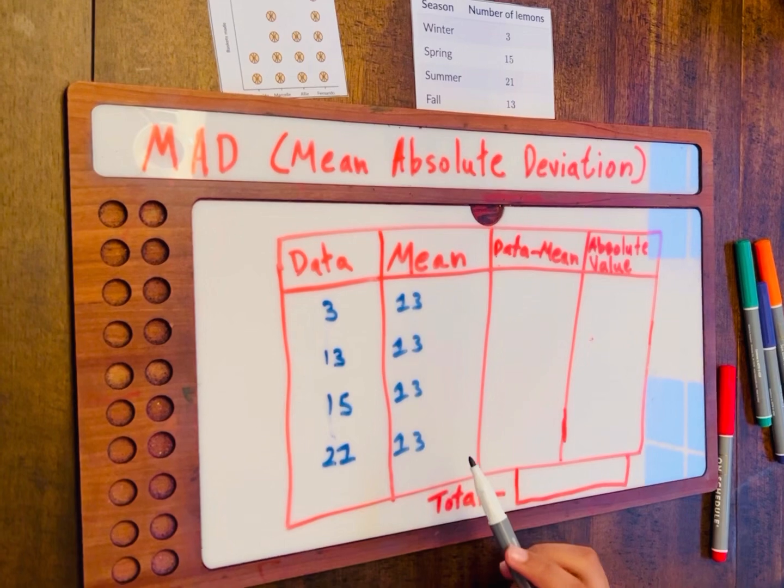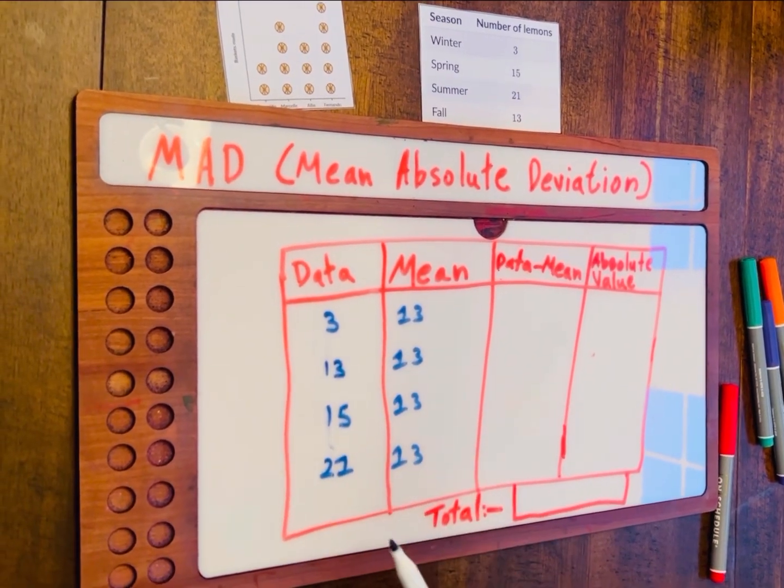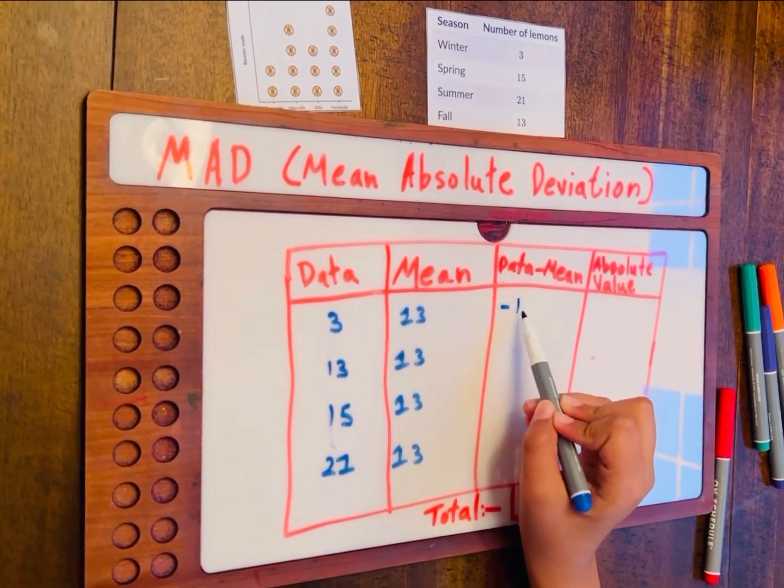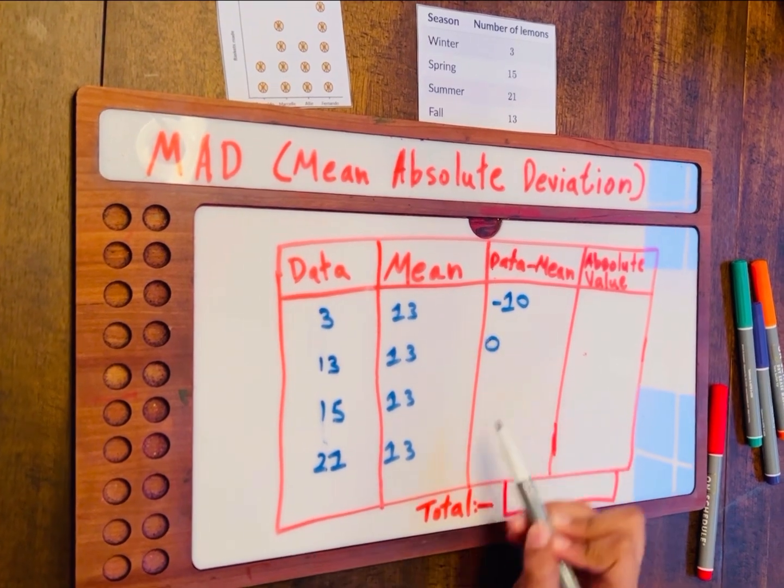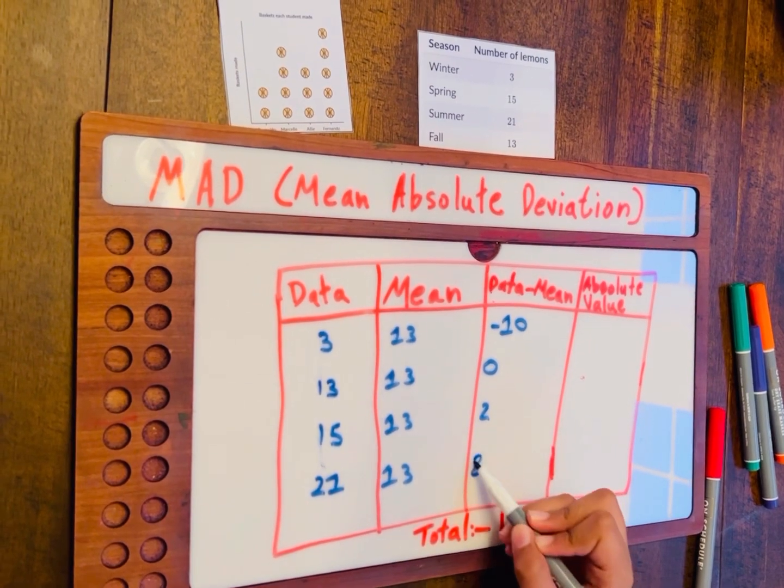So now that we have our mean, we have to subtract the data and mean. 3 minus 13, that will end up in a negative number, which is negative 10. Next, let's do the other one. 13 minus 13, we get 0. 15 minus 13, 2. 21 minus 13, that's equal to 8.